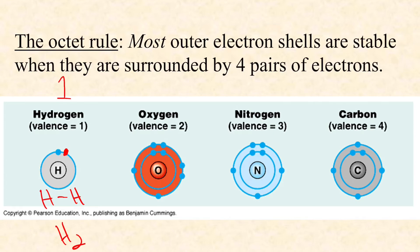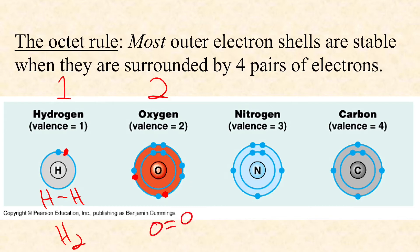Hydrogen is always going to form one covalent bond with something, whether it's another hydrogen or something else. Think about H2O — the hydrogens are each forming one bond with oxygen. But oxygen forms two bonds because in oxygen's valence shell it has six electrons, meaning it needs to pair off two of them. So oxygen needs to form two bonds, and H2O is a perfect example. Oxygen can also form a double bond with itself to make molecular oxygen, O2.